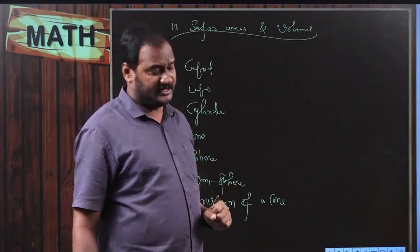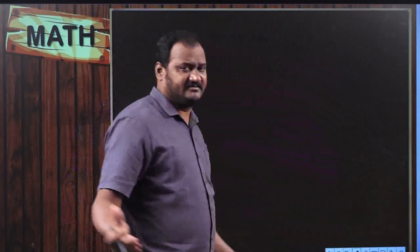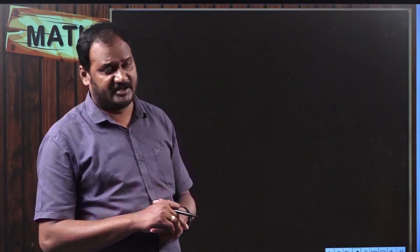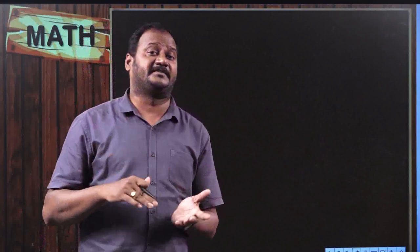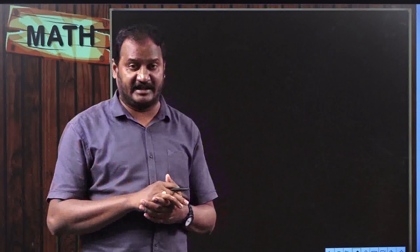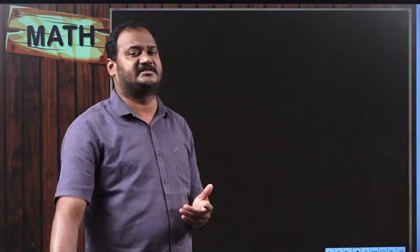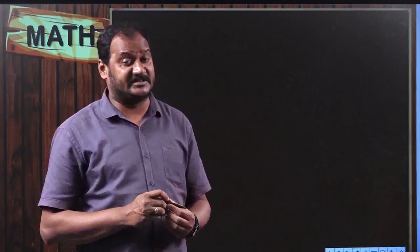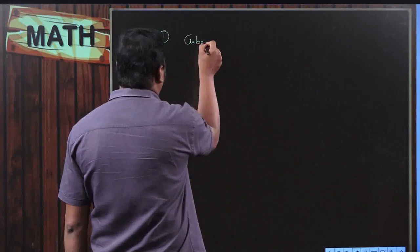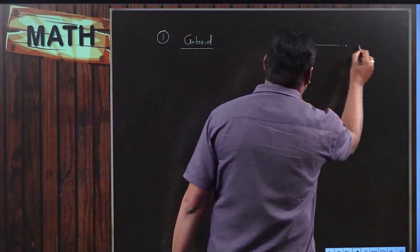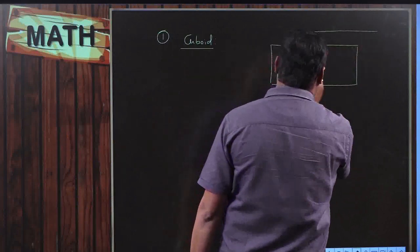Coming to the cuboid — what do you mean by a cuboid? When you observe around you, there are so many cuboids. A cuboid is a solid figure whose length may not be equal to breadth, or breadth may not be equal to height, or height may not be equal to length. If at least any two dimensions are different, then that solid prism is said to be a cuboid. I am going to draw one cuboid here. This is one cuboid — you can also call it a rectangular prism.